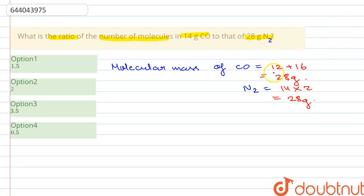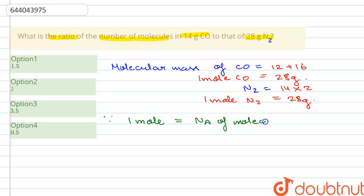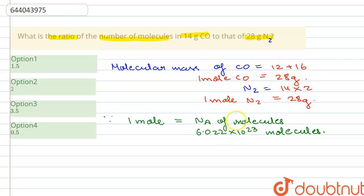Since both molecular masses are 28 grams, we can say that 28 grams is equal to one mole of carbon monoxide, and 28 grams is also equal to one mole of nitrogen gas. We know that one mole is equal to Avogadro's number of molecules, which is 6.022 × 10²³ molecules. So 28 grams of carbon monoxide contains 6.022 × 10²³ molecules, and similarly 28 grams of nitrogen also contains 6.022 × 10²³ molecules.